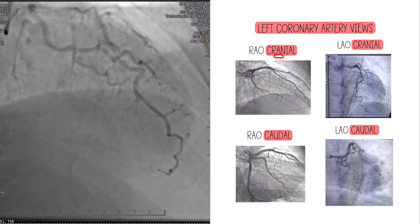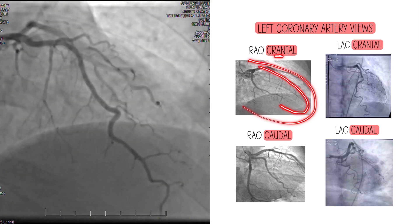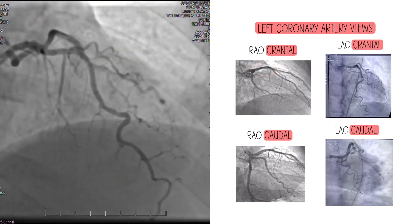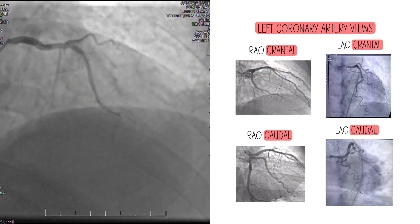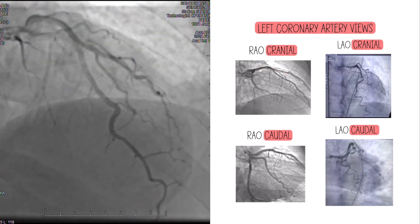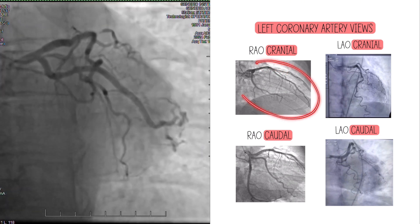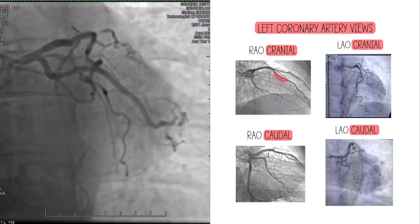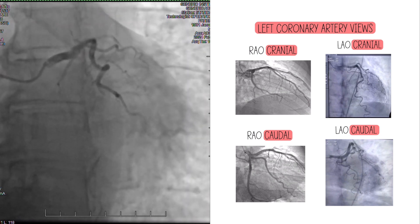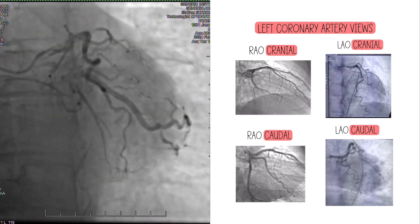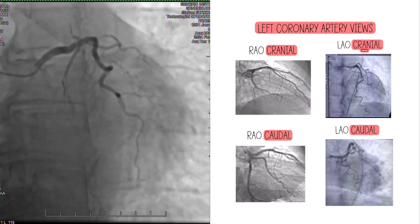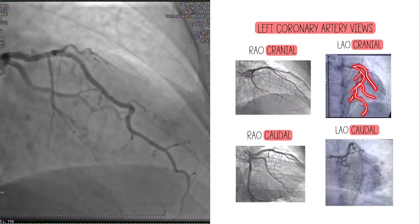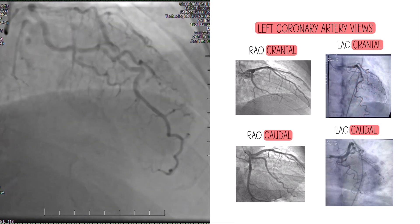In RAO cranial, since it's a cranial view, the LAD will be seen best. You can see the mid and distal LAD really well. You'll notice this proximal portion is overlapped with what we think is the diagonal. So if I showed you one view and said identify all of the vessels, you might not be able to — you might be able to say this is the LAD, but you can't really tell where the diagonal ostium is. So you'd go to a different view, like LAO cranial, where you can see the LAD really well and see where the diagonals take off versus where the septals take off. That's why we take multiple views — you can't see everything in one.